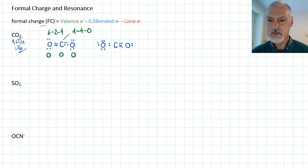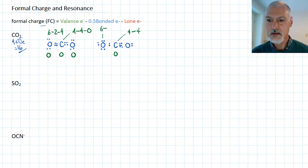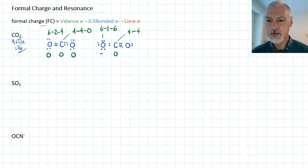In the asymmetric molecule with a single and triple bond, the story is a bit different. The carbon in the middle is the same: four valence electrons minus half of eight bonded gives a formal charge of zero. But the oxygen on the single-bond end has six valence electrons; there are two bonded electrons, so half is one, and there are six lone electrons — giving a formal charge of minus one. The oxygen on the triple-bond end: six minus half of six is three, minus the lone electrons, giving a formal charge of plus one.